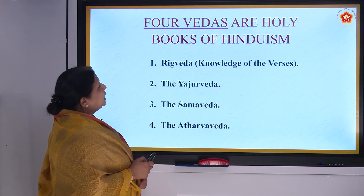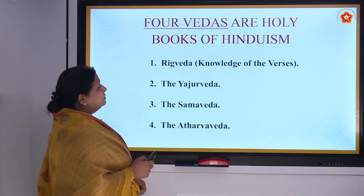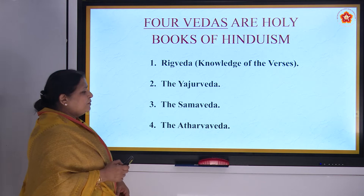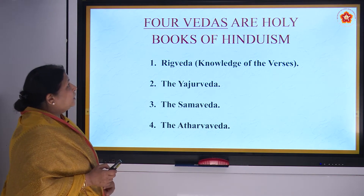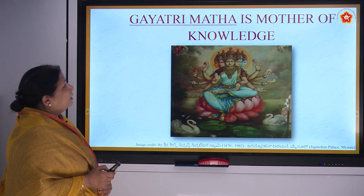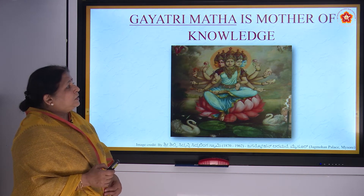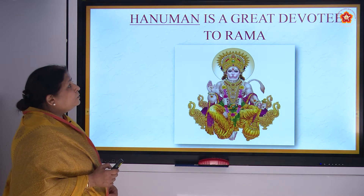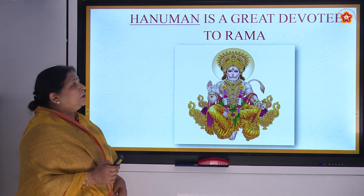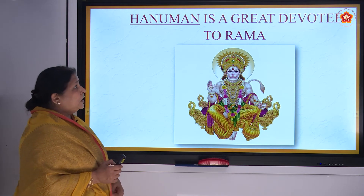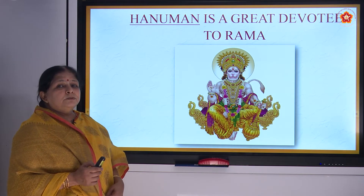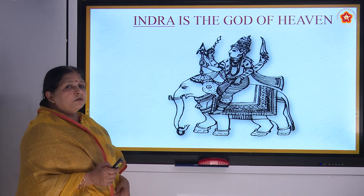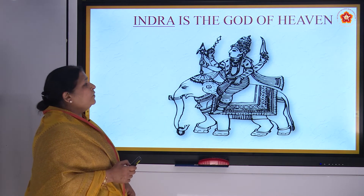F — Four Vedas are holy books of Hinduism: Rig Veda (knowledge of the verses), Yajur Veda, Sama Veda, and Atharva Veda. G — Gayatri Mata is the mother of knowledge. H — Hanuman is a great devotee of Rama. I — Indra is the god of heaven.